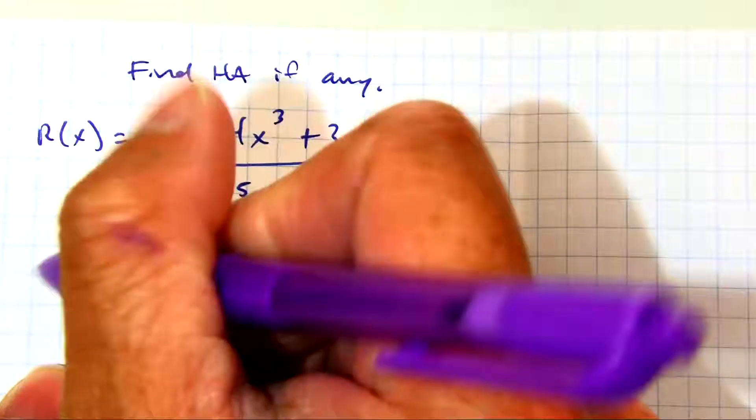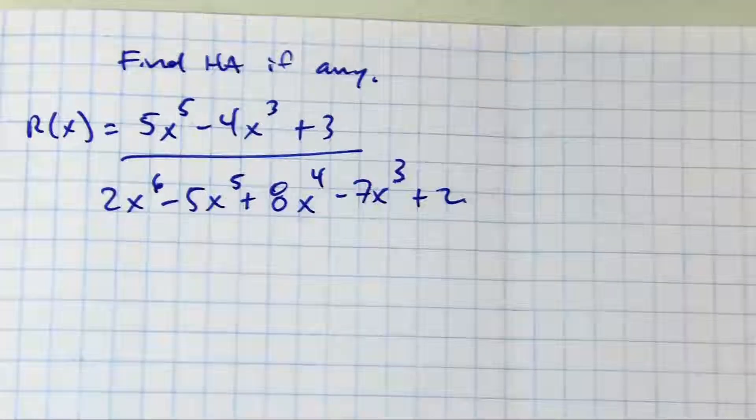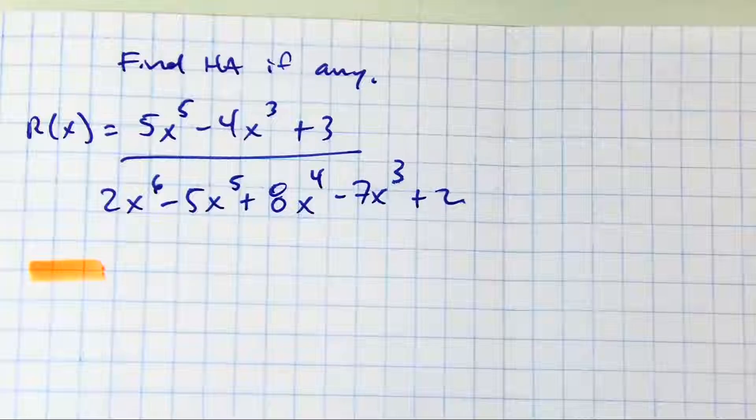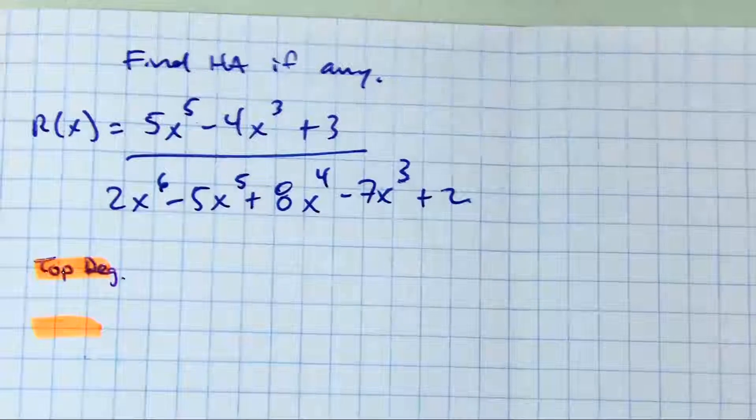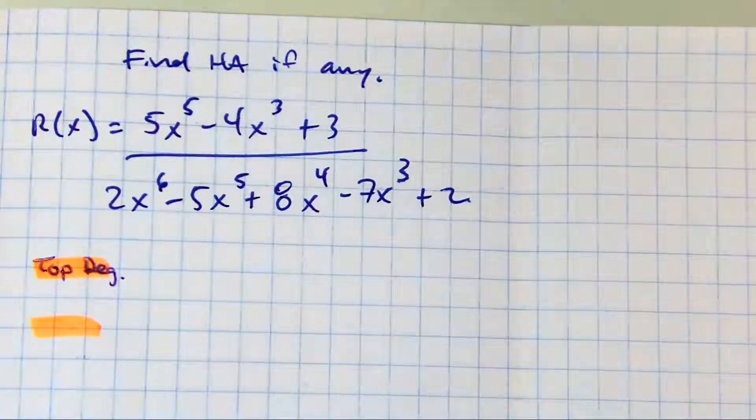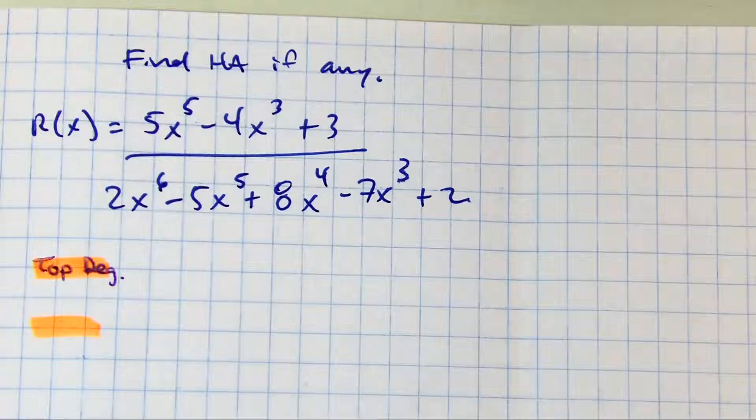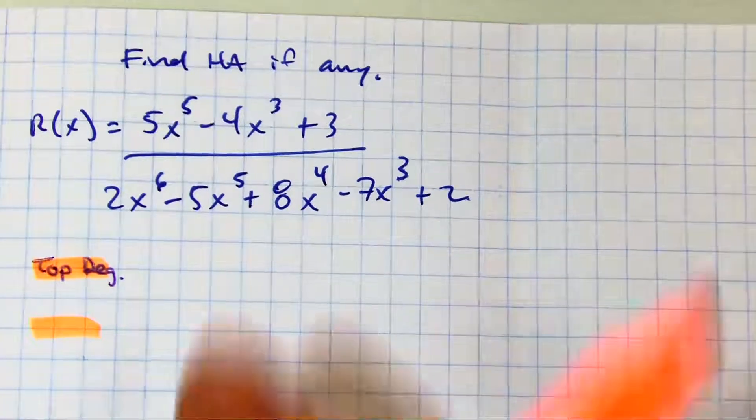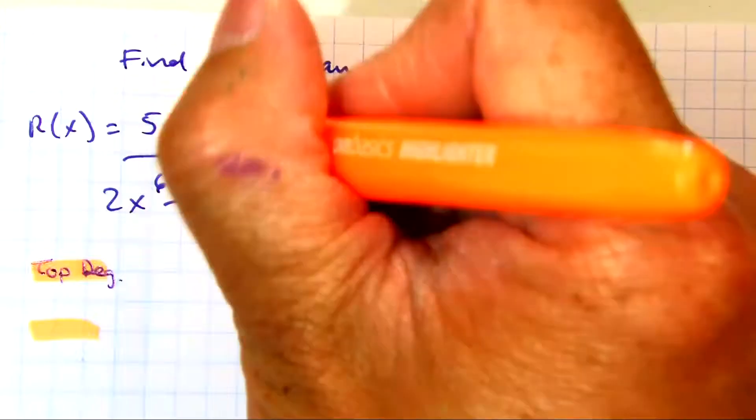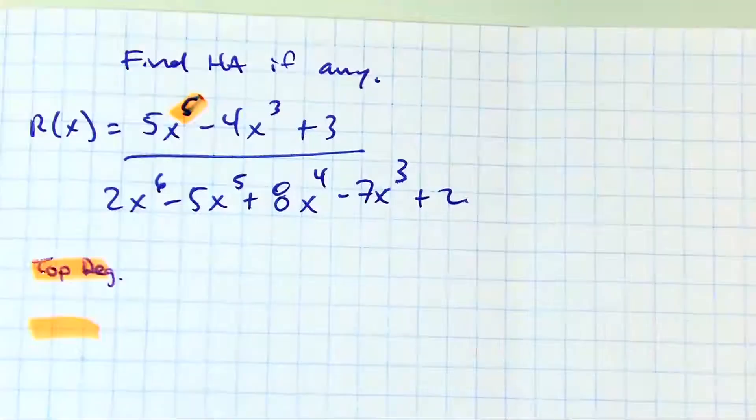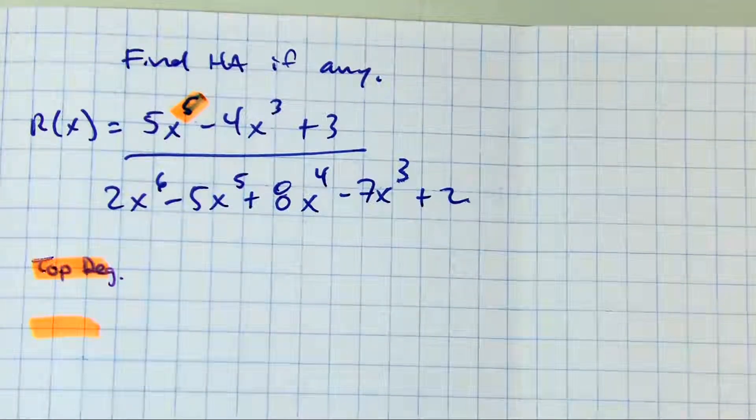So the first thing I'm going to do is let's find the top degree. In the numerator, put your finger at the highest or largest degree. That's the 5. So let's write 5.